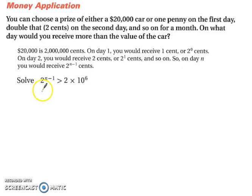So we can use this expression to help us. So let's multiply both sides by log. So we now have the log of 2 to the n minus 1 is greater than the log of 2 times 10 to the 6th.